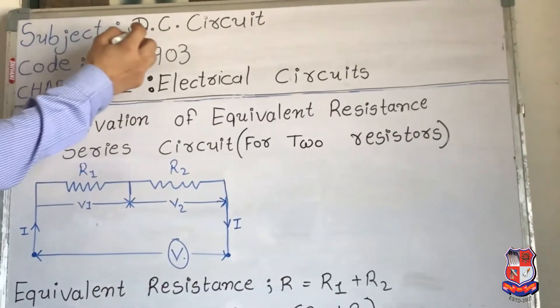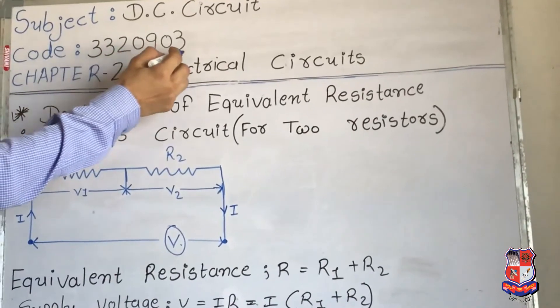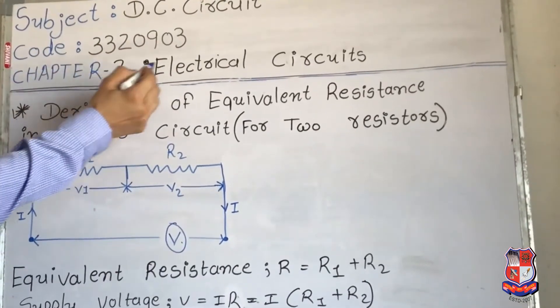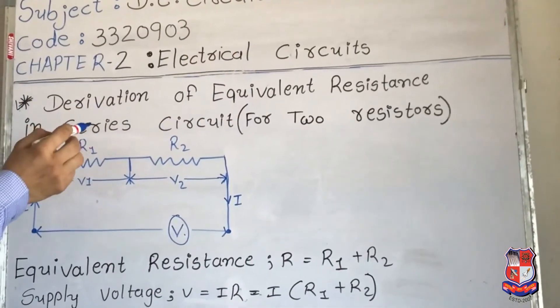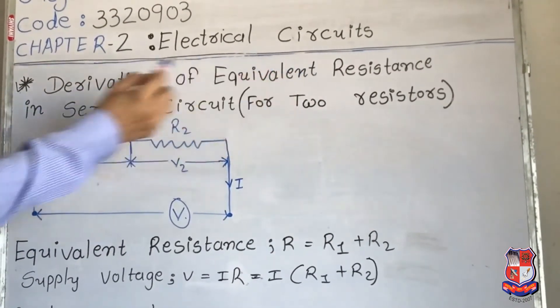Subject: DC Circuit, code 3320903, and your chapter 2, electrical circuits. Your derivation is derivation of equivalent resistance in series circuit for two resistances.